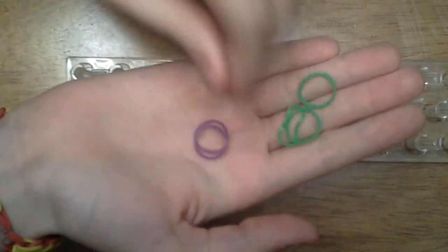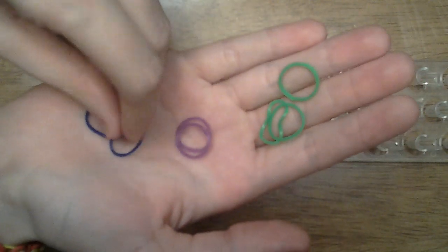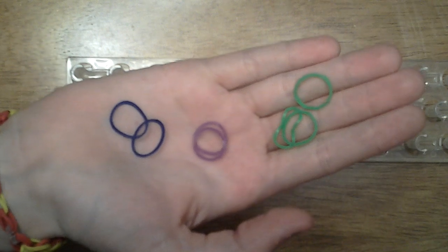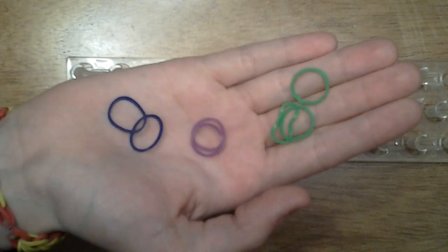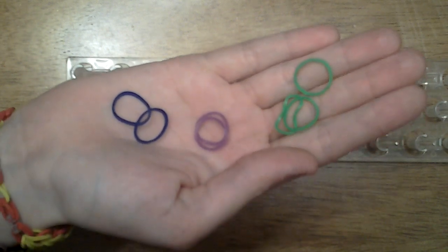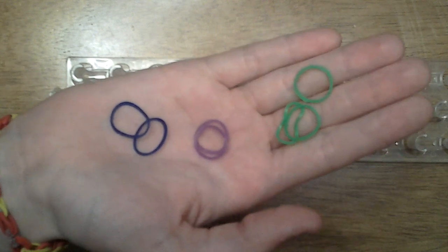So today we're going to be using three different colors. We're going to be using this green and some purple and the blue. That way when your bracelet's finished you can really see the X's forming so it kind of looks like a Game of Cat's Cradle.